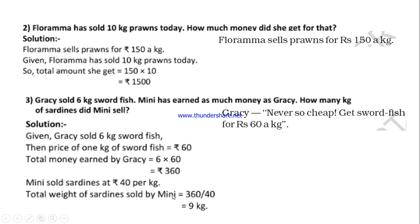Once again, children, why do we divide here? Mini also earned Rs. 360 — that is what the sentence says: Mini has earned as much money as Gracie. How much did Gracie earn? Rs. 360. The same amount was received by Mini. How many kg of sadden fish did Mini sell? We have the amount Rs. 360 and the cost per kg. We are going to find the number of kg, so here also we divide: 360 divided by 40.